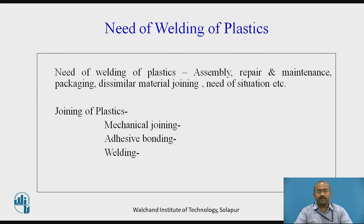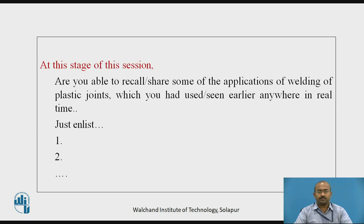Particularly, repair and maintenance, packaging, dissimilar material joining, and need of the situation are some of the specific needs for welding of plastics. Joining of plastic basically involves mechanical joining with fasteners, adhesive bonding with chemical adhesives, and lastly welding, which we are going to see in detail. At this stage, are you able to recall or share some applications of welding of plastic joints which you have used or seen in real time?